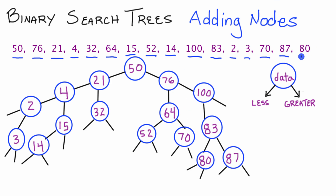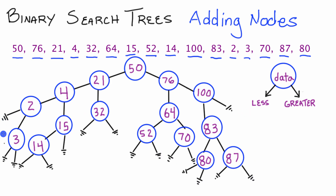Now we've added node 80, the final node in our tree. I'm going to draw null terminating symbols at the end of all the pointers that aren't pointing to anything. These null terminating symbols indicate that we have a pointer here, but we're setting it to null — it's not pointing to anything right now.